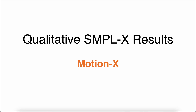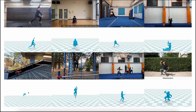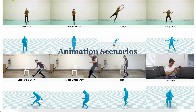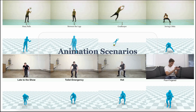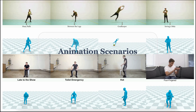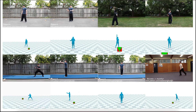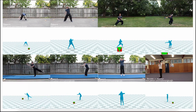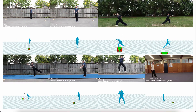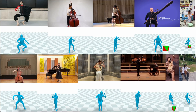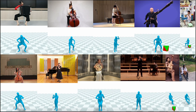Here we show some visualization of the annotated whole-body motions in different scenarios, such as game scenarios with diverse professional actions, animation scenarios with many vivid motions, kung-fu scenarios with challenging motions and challenging global trajectory, and musical instrument motions with paired music, fine-grained finger movements, and text annotations.